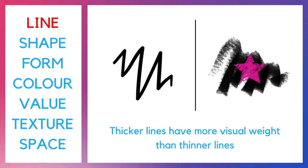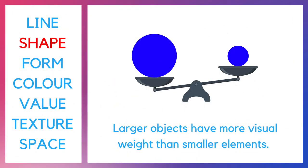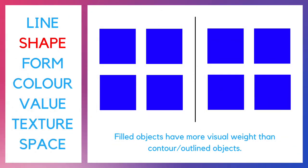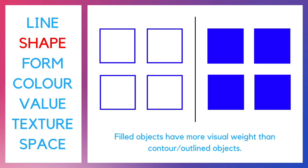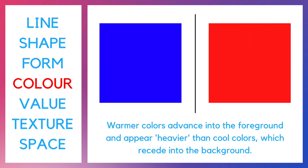Thicker lines have more visual weight than thinner lines. Larger objects have more visual weight than smaller elements. Filled objects have more visual weight than contour or outlined objects.